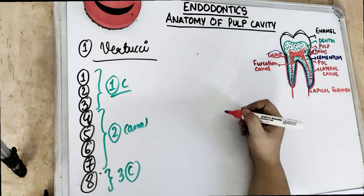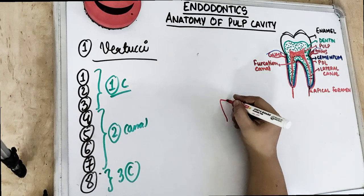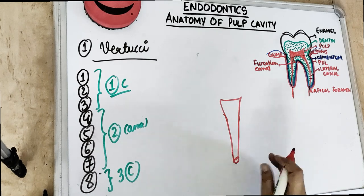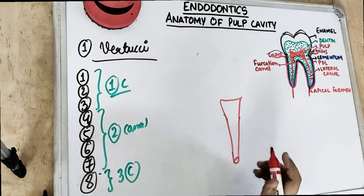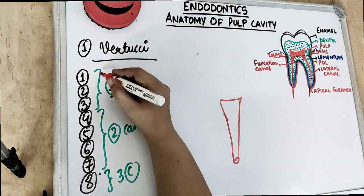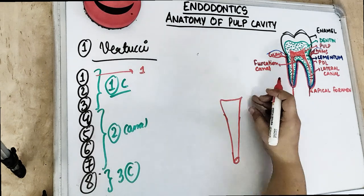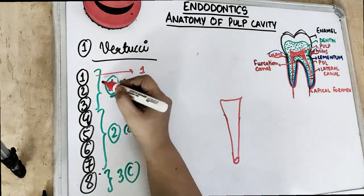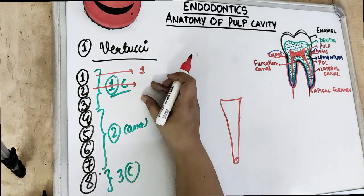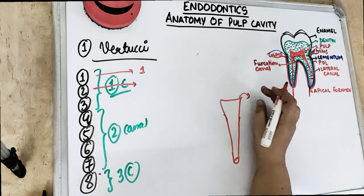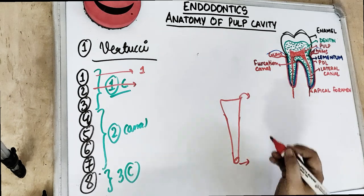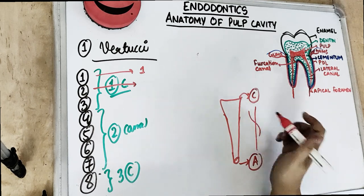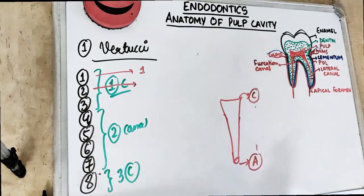Let's go through type 1. A single canal means there is one canal at the pulp chamber and it exits as one canal at the apex. So in type 1, there is 1 canal at the pulp chamber and 1 canal at the apex. To understand this, remember we are talking about two things: how the canal starts at the pulp chamber and how it ends at the apex.